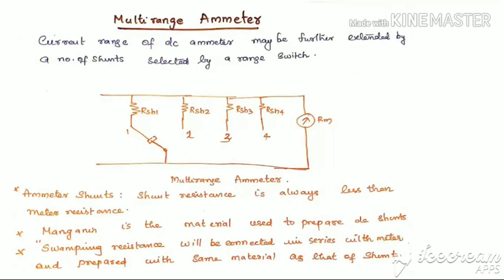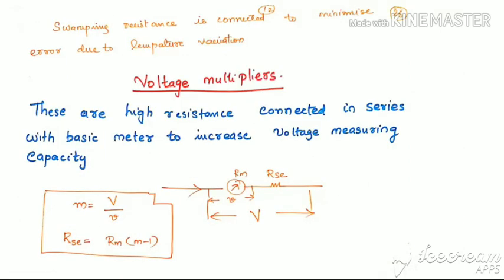A multi-range ammeter uses a range switch to select different values of shunt resistance, changing the measurement range accordingly. An important property of ammeter shunts is that the shunt resistance is always less than the meter resistance. Manganin is the material used to prepare DC shunts. A swamping resistance is connected in series with the meter, prepared from the same material as the shunt, to minimize errors in measurement due to temperature variation.